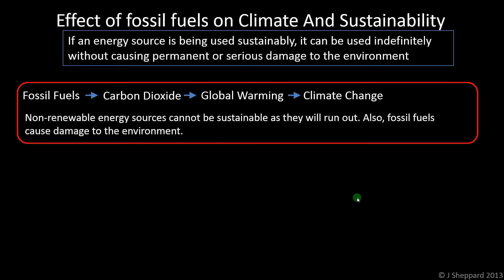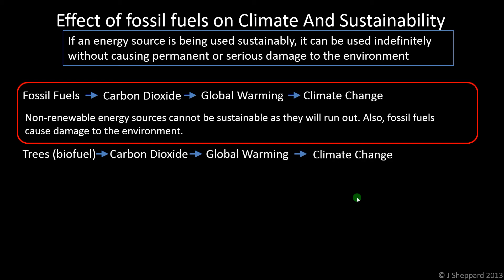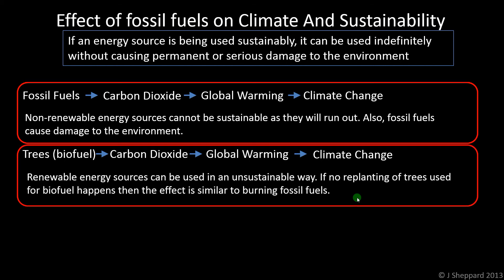Perhaps less obviously, renewable resources can sometimes be used in a non-sustainable way as well. The most obvious example is biofuel. If we take trees as an example, when we burn them they release carbon dioxide, which again can lead to global warming and climate change. So it looks very similar to the fossil fuels case. And the point is, if all we do is chop down the trees and burn them, then it is very similar — there's no real difference. We're using that renewable resource in an unsustainable way.